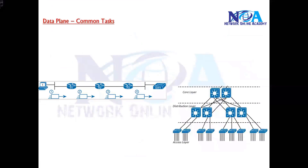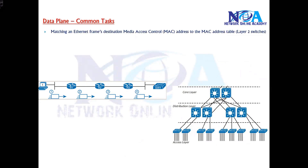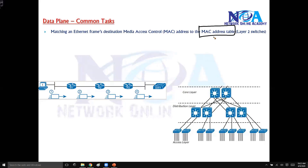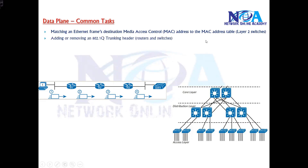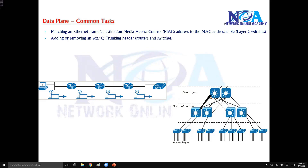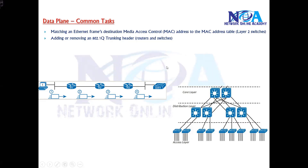Some common data plane examples: in a switched network, the switch identifies the MAC address and forwards out of the specific port — that is one data plane task. Another example is when packets move between switches over trunk links, the device does VLAN tagging and then forwards the packet from switch to switch, or from switch to router if you're using sub-interfaces or inter-VLAN routing.